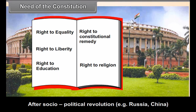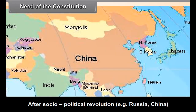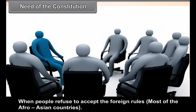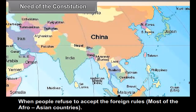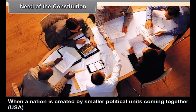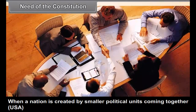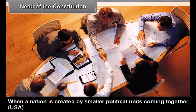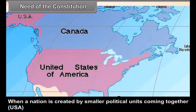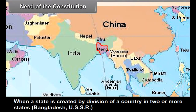In which situations does the need for a Constitution arise? After a socio-political revolution, for example, Russia and China. When people refuse to accept foreign rule — as in most Afro-Asian countries. When a nation is created by smaller political units coming together, as in the USA. When a state is created by the division of a country into two or more states, as in the cases of Bangladesh and the USSR.